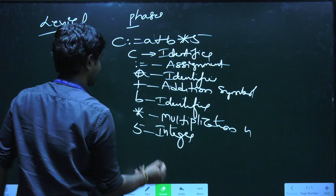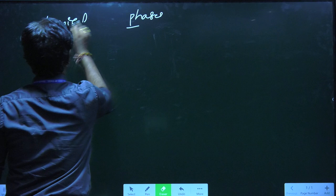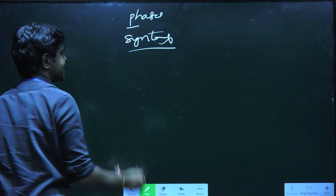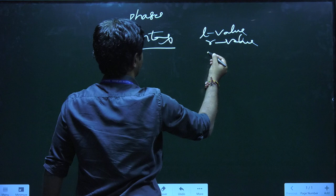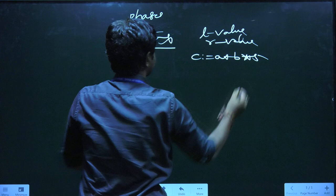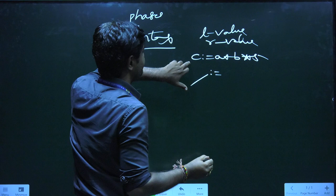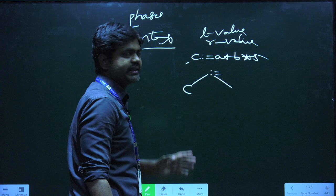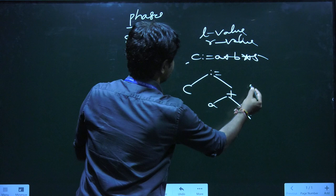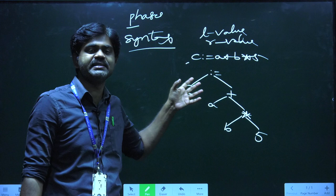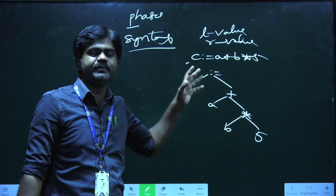Now we'll see syntax analysis. In syntax analysis, we draw a syntax tree, also called a parse tree. We mainly depend upon L-value and R-value. For C equal to A plus B into 5, the equal sign becomes root, C is the L-value, and A plus B into 5 is the R-value. Within that, plus becomes the root with L-value A and R-value B into 5. In B into 5, star is the root with L-value B and R-value 5. This is a typical parse tree for the given input.